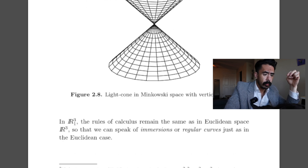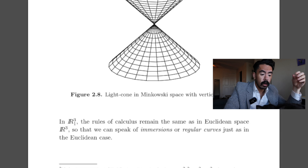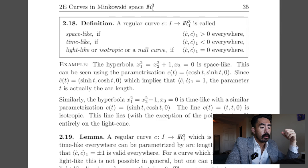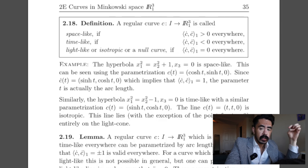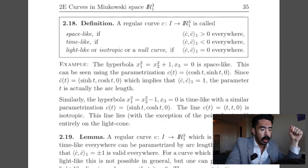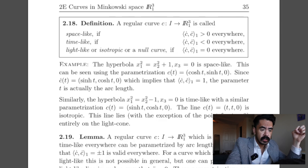There's a figure here showing a light cone in Minkowski space with a vertical X1 axis — very reminiscent of the conic section shape where taking slices through two cones yields points, lines, parabolas, etc. In R-sub-1 superscript 3, the rules of calculus remain the same as in Euclidean space R3, so we can speak of immersions or regular curves just as in the Euclidean case. A regular curve C from an interval I to R-sub-1 superscript 3 is called space-like if the inner product of C-dot with itself is greater than zero everywhere.